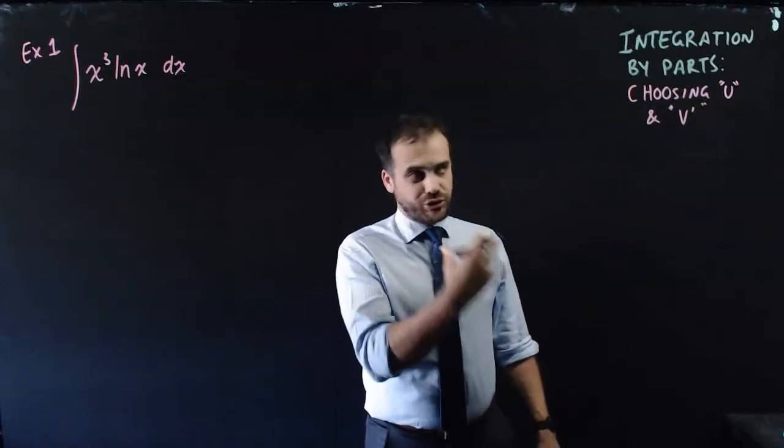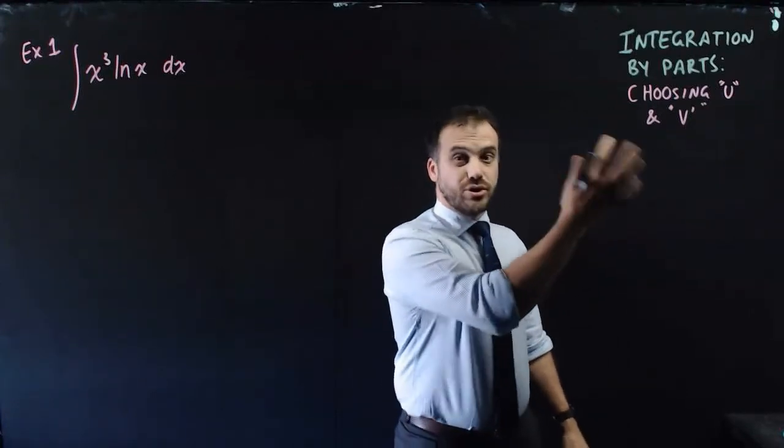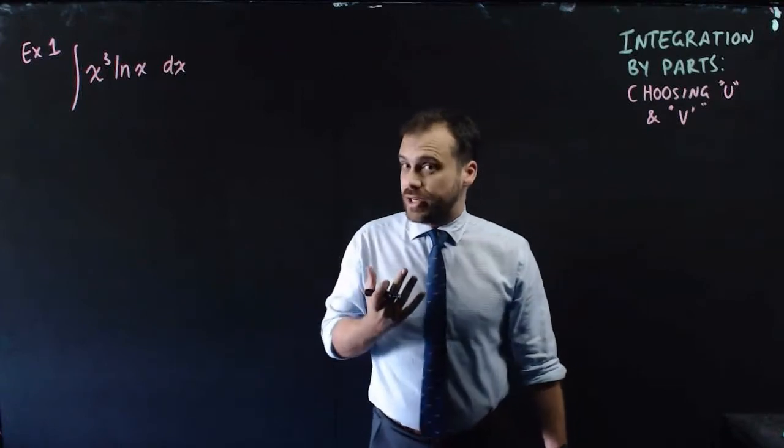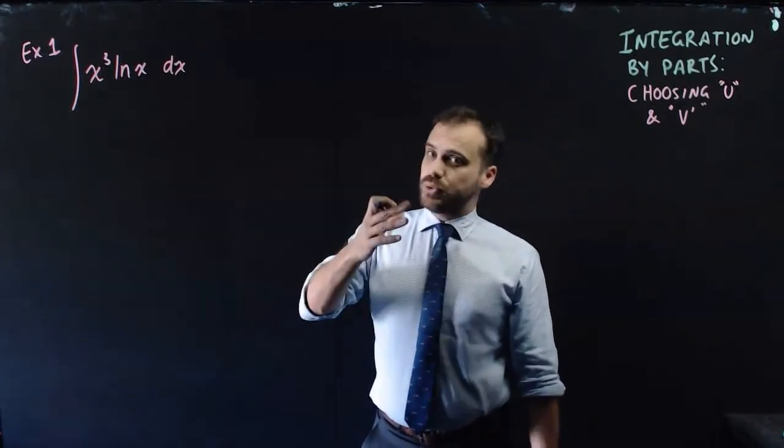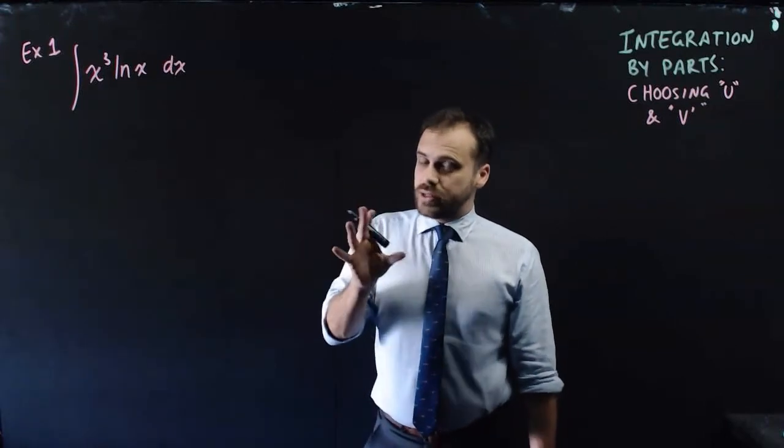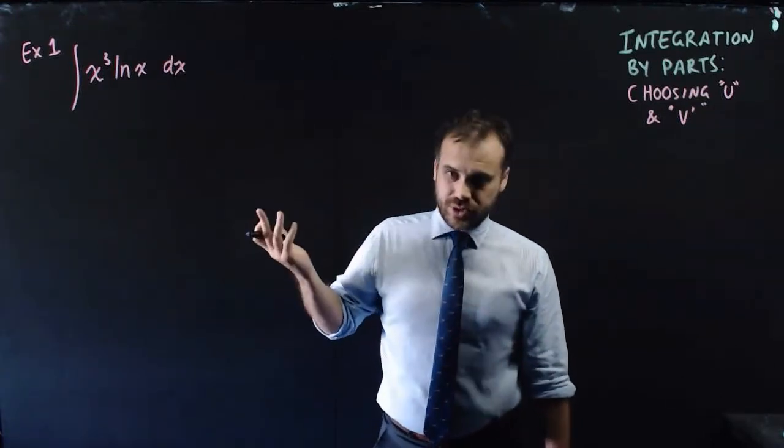So when you're doing integration by parts, it can be tricky to decide which one is going to be u and which one is going to be v'. If you look at your example here, which one should you make u and which one should you make v'? One is going to make it easier to solve, one is going to make it impossible to solve.